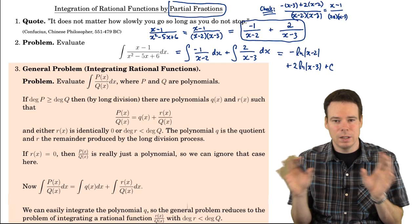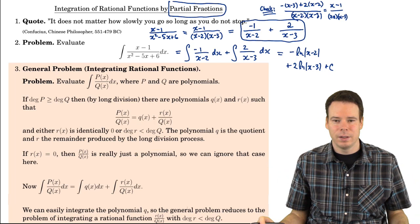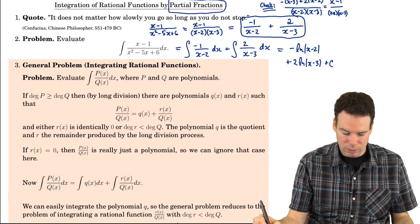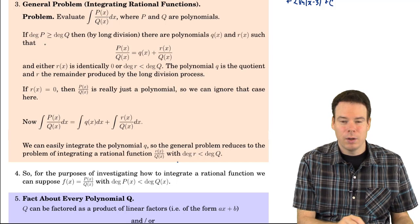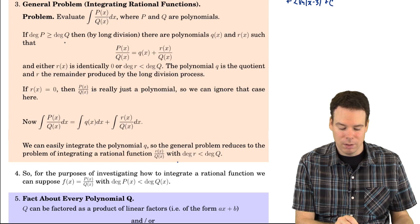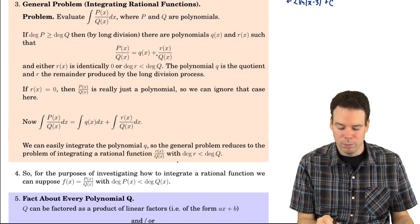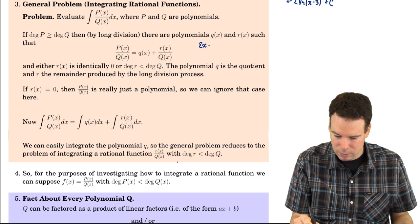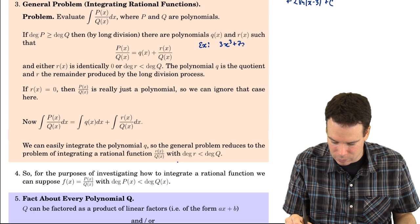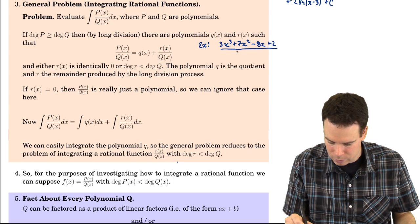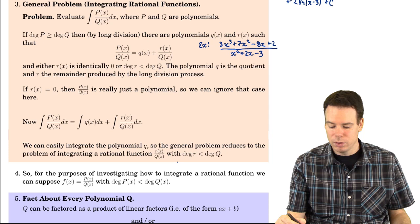So integration of rational functions is our goal, accomplished by partial fraction decomposition. We decompose the original integrand into pieces, each involving part of the original denominator, and integrate term by term. Now, what happens if the degree of the numerator is bigger than the denominator? Then you do a bit of long division and write it as a polynomial plus another rational function. For example: 3x³ plus 7x² minus 8x plus 2, all over x² plus 2x minus 3.